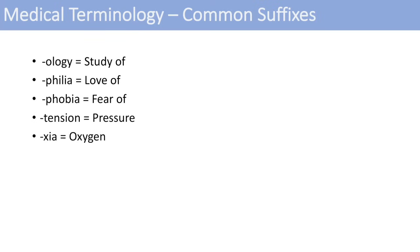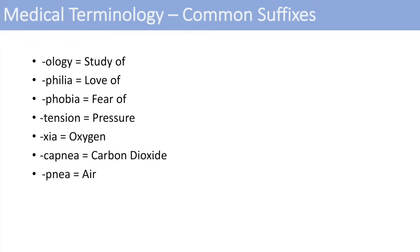The suffix -oxia relates to oxygen — hypoxia is low oxygen. Another gas to be aware of is carbon dioxide, and its suffix is -capnea — so hypercapnea means high carbon dioxide levels. The next one is -pnea, which means air or breathing — related to pneumo with that odd P-N spelling. You might have heard of dyspnea or hyperpnea — different things that have to do with air or breathing. And another very common suffix is -ase at the end of a word, which usually means enzyme.